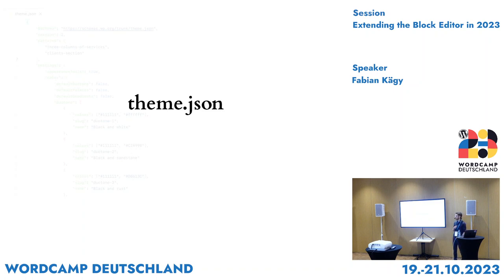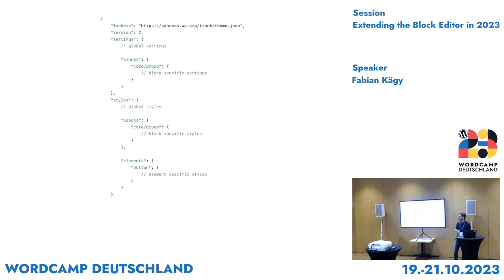From there we're going to dive into the first section: theme.json. As you may know, theme.json allows us to configure settings, presets, and styles of our themes. It is structured with a global section where we can configure all kinds of global settings, and we can also dive into per-block or per-element settings and styles — things like the default color palette, or whether somebody is allowed to use custom colors.